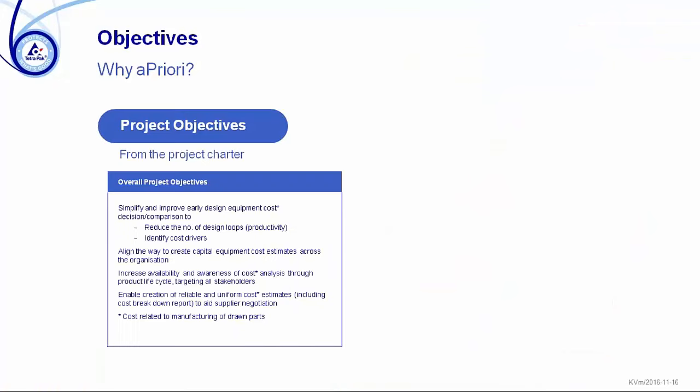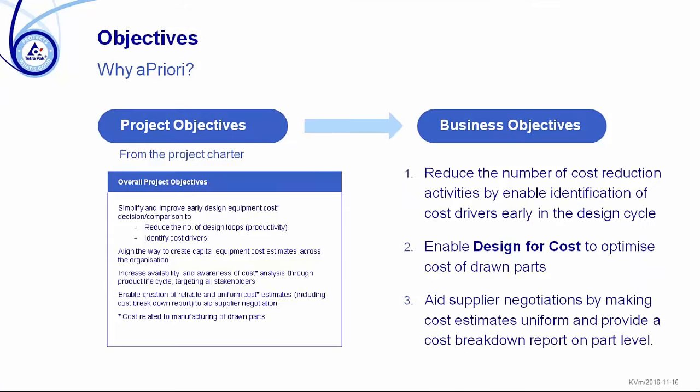So how do we bring that competence back? That is actually how aPriori came into our life. We started a project with the objective to evaluate different tools. We did have manufacturing specialists but we had too few of them — it's a competence that is not really easy to acquire, and they became bottlenecks. The business objective was to reduce the number of cost reduction activities by enabling identification of cost drivers early in the design cycle and enabling design for cost to optimize cost of drawn parts, as well as to aid supplier negotiations by making cost estimates uniform and providing a cost breakdown report at part level.